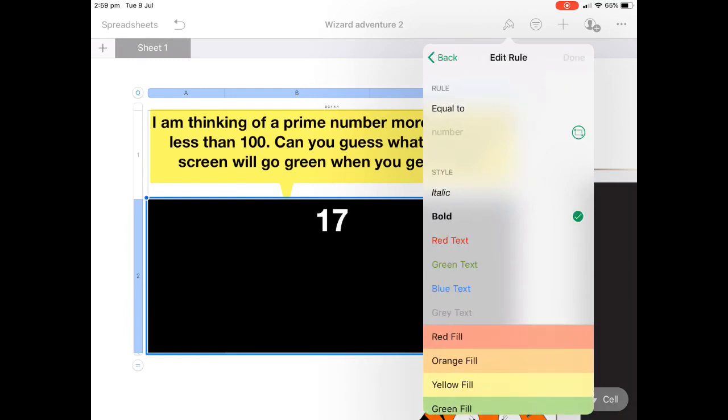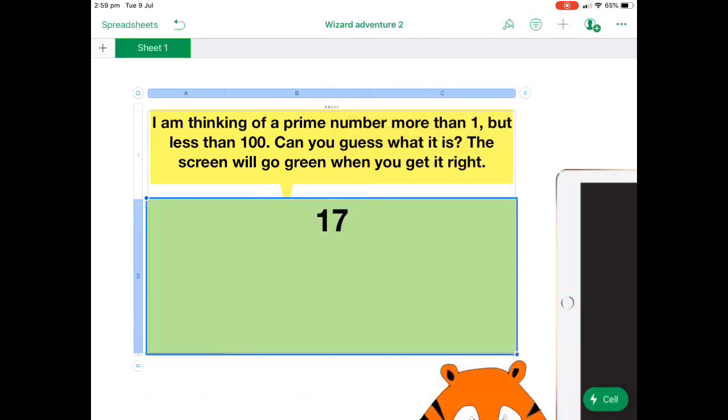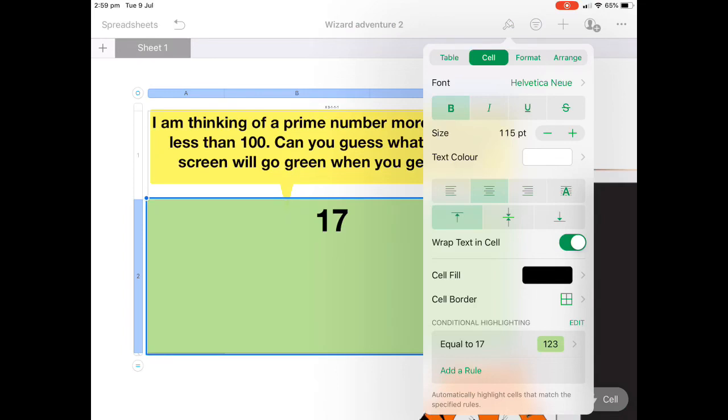And then we're going to say, well, if it's equal to 17, which is the correct answer, we want that cell to go a certain color. So we'll make it go green. And then we want to create another rule. So we'll do the same thing underneath it.